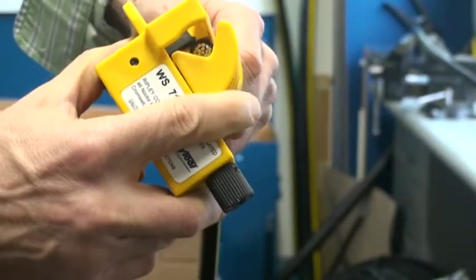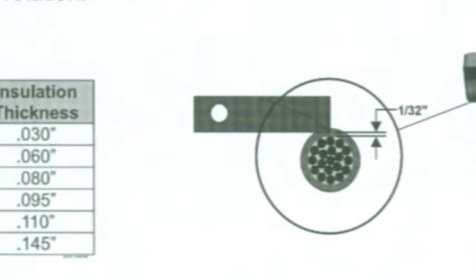The blade should be set to a depth no lower than 1/32nd of an inch off the conductor.